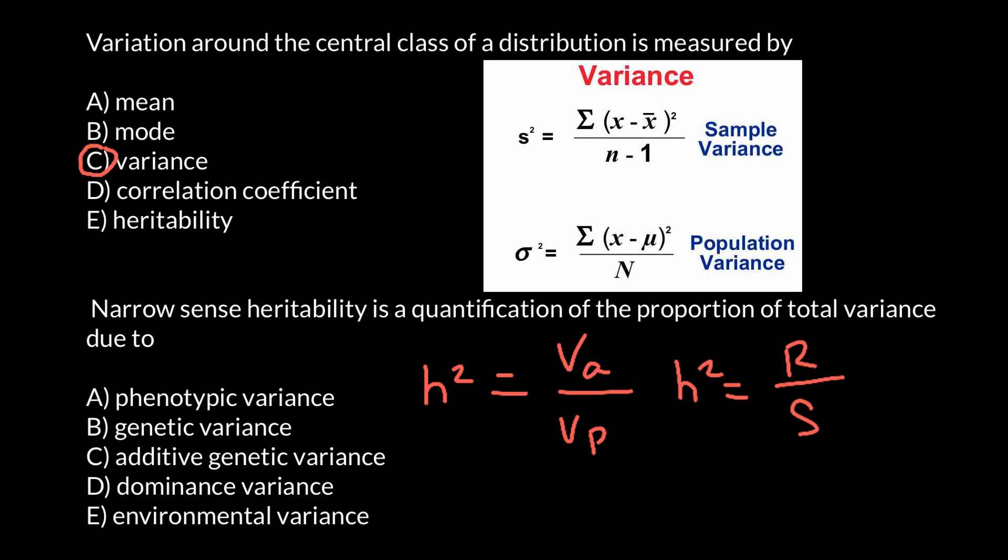Basically, these two formulas we can use in order to find narrow sense heritability. So the correct answer would be additive genetic variance, answer C.